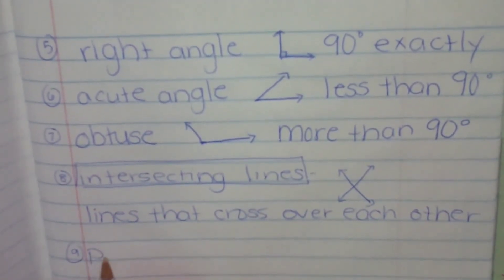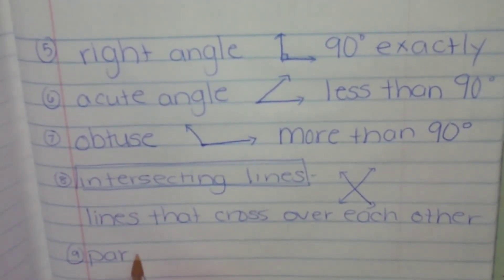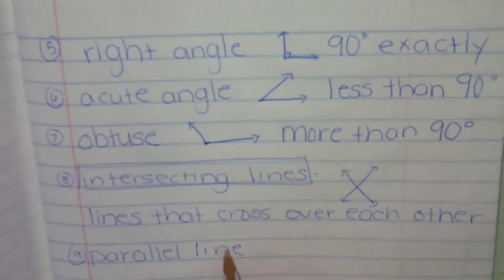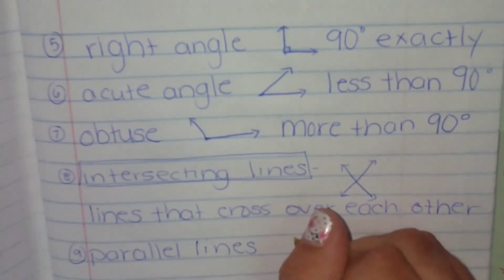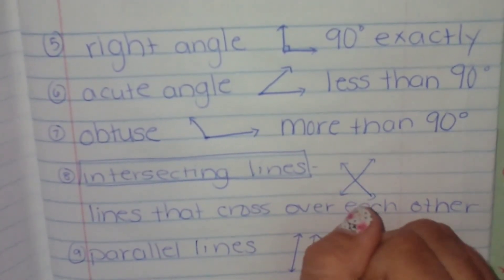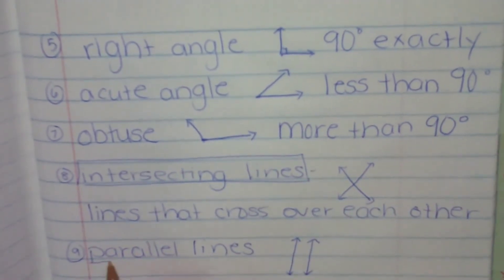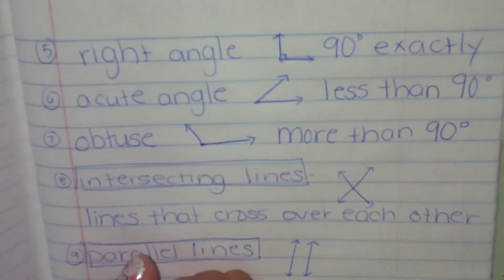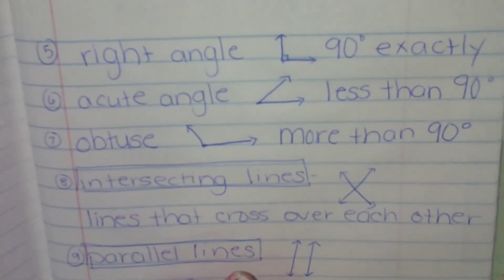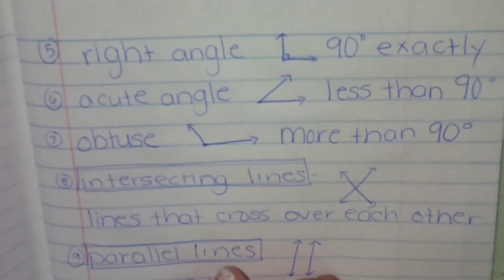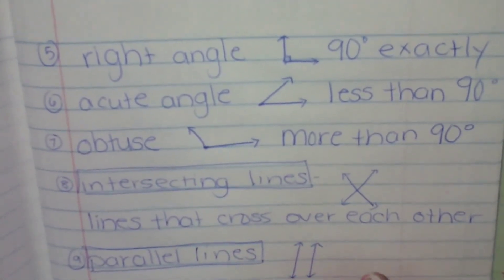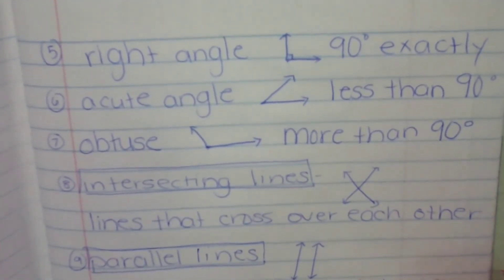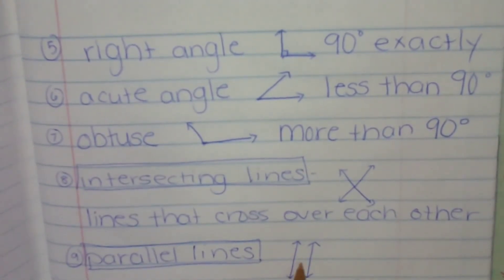Now the next set is parallel lines. And those are lines that are the same distance apart all the way through, and they will never cross paths. There's that word again, intersect. Because they're the same distance.